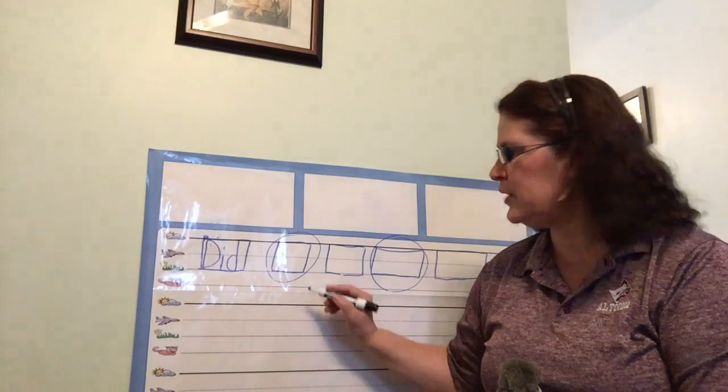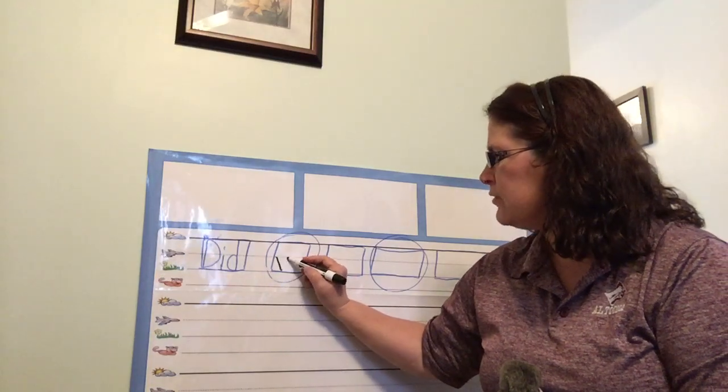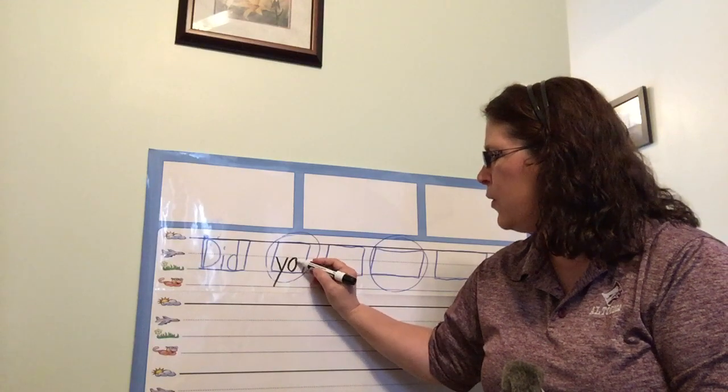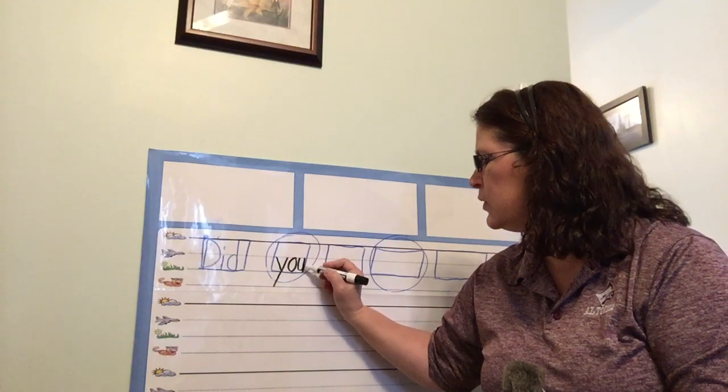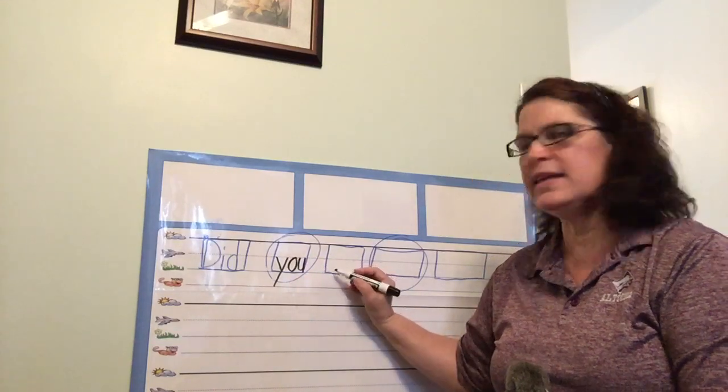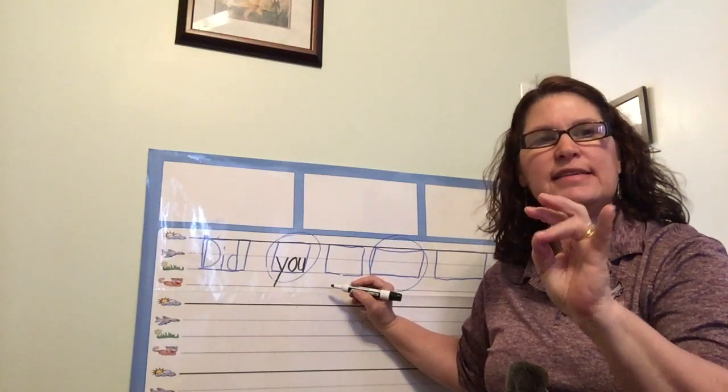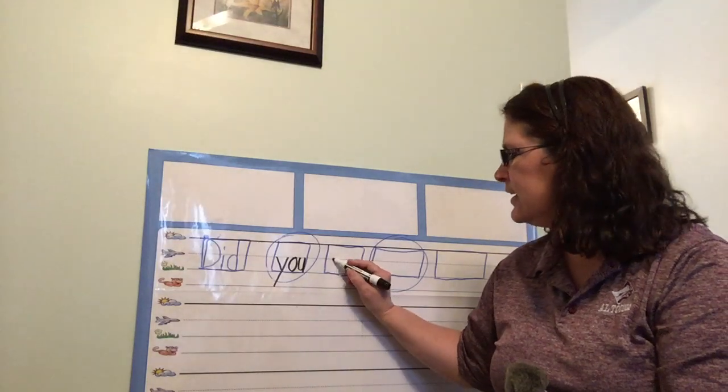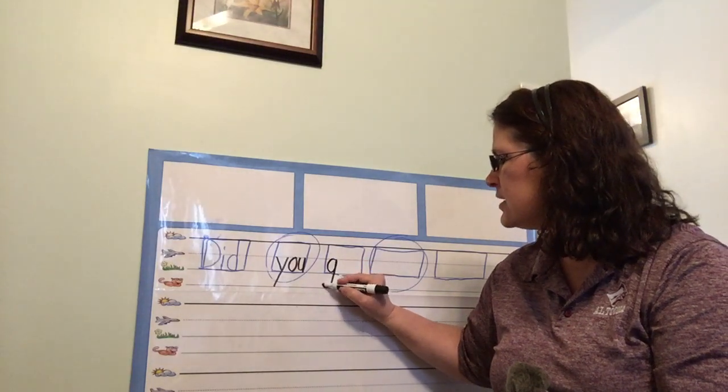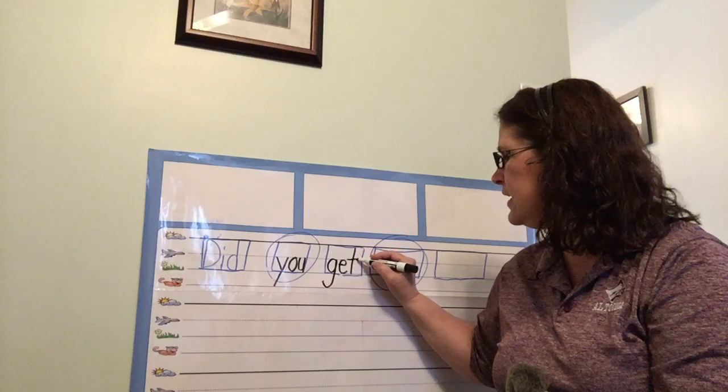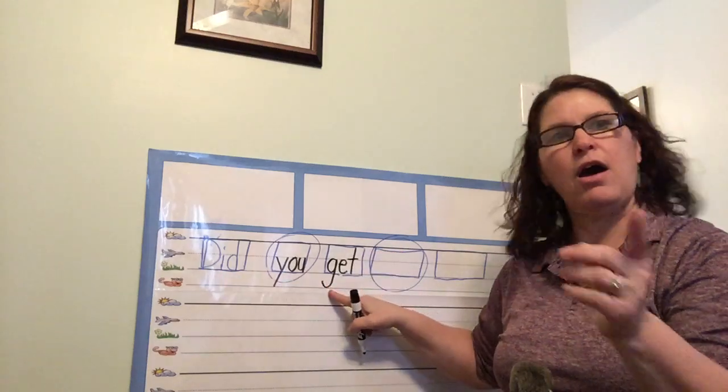Did you. You. I know how to spell you. That's a trick word. Y. Remember your Y goes down to the worm line. O. You. Did you get. Get. I think I can tap that one. Tap it with me. Get. G, E, T. Did you get your.